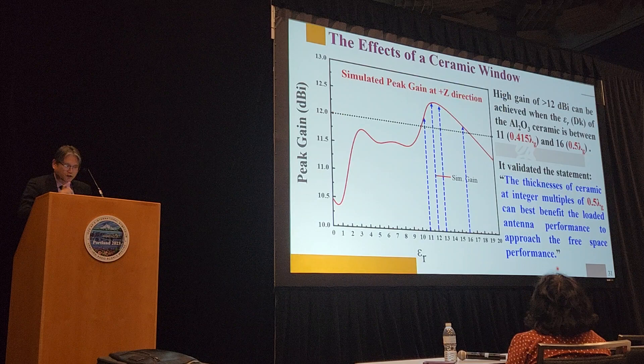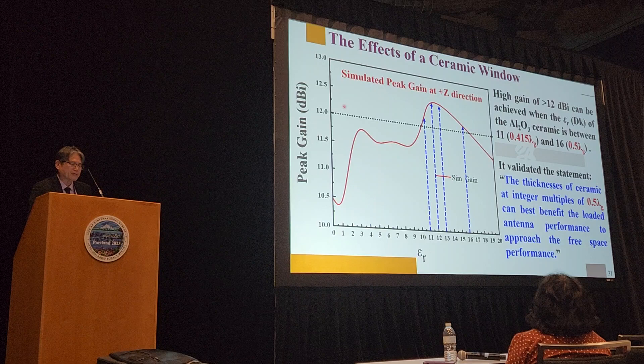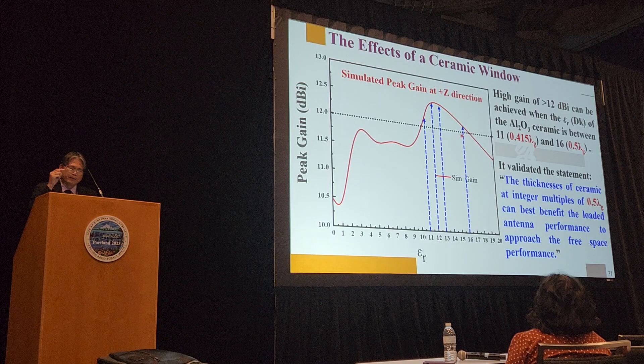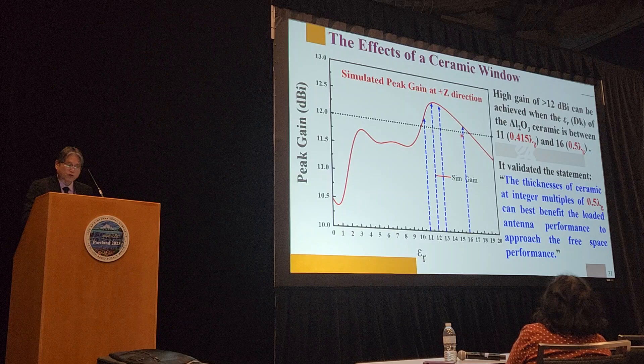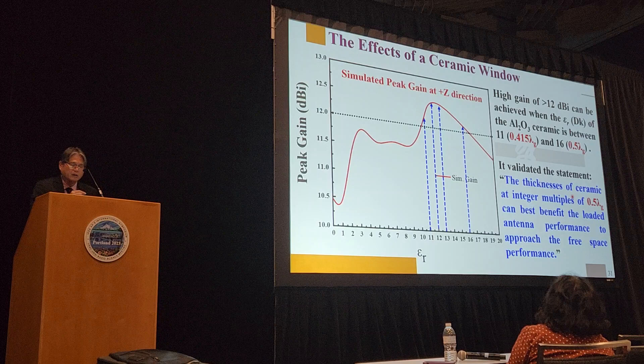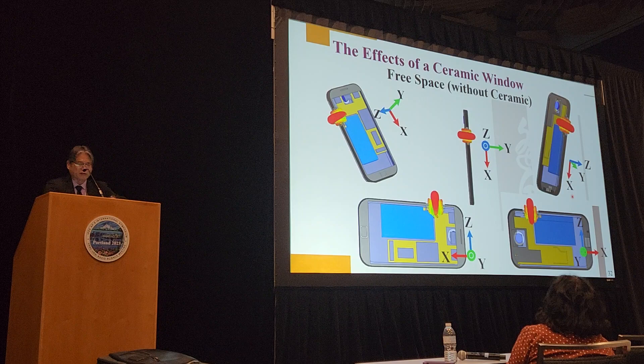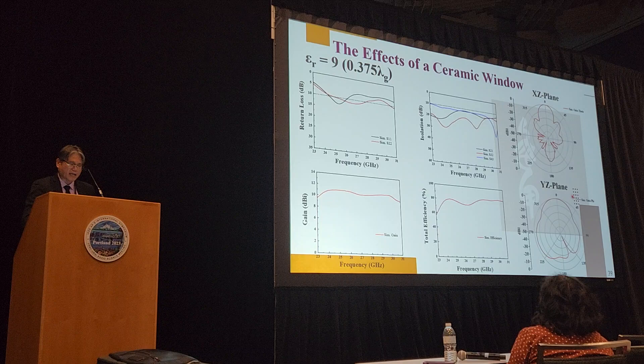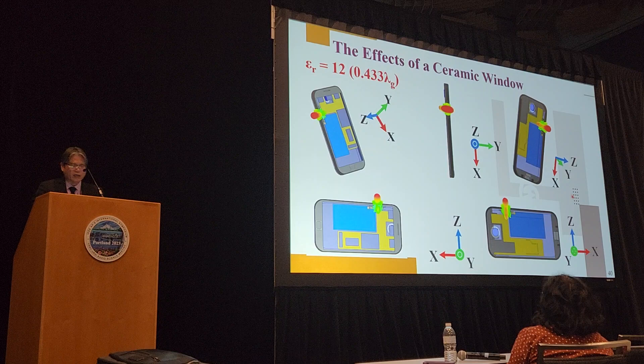Here is the graph of dielectric constant versus peak gain pointing in the positive Z direction. You can see that between epsilon r of 11 to 16, we have a really nice peak gain of approximately 12 dBi. This validates Dr. Huang's statement that the thickness must be at an integer multiple of approximately 0.5 lambda g. With epsilon r of 12, the thickness is approximately 0.4 lambda g — you can see that covered by the ceramic, the radiation pattern is back almost the same as in free space.